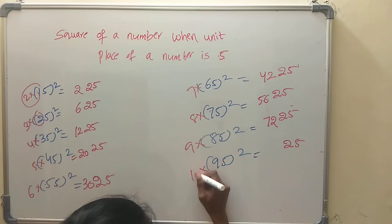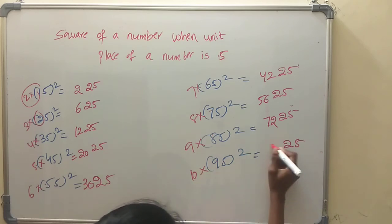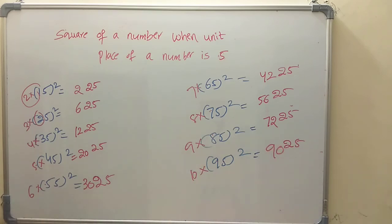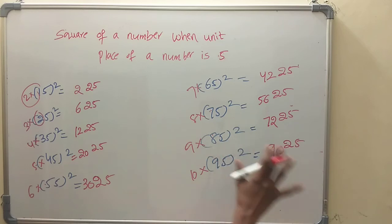Next number is 10. For 105 squared: tens digit is 10, next number is 11, 10 into 11 is 110, append 25. Result: 11025.